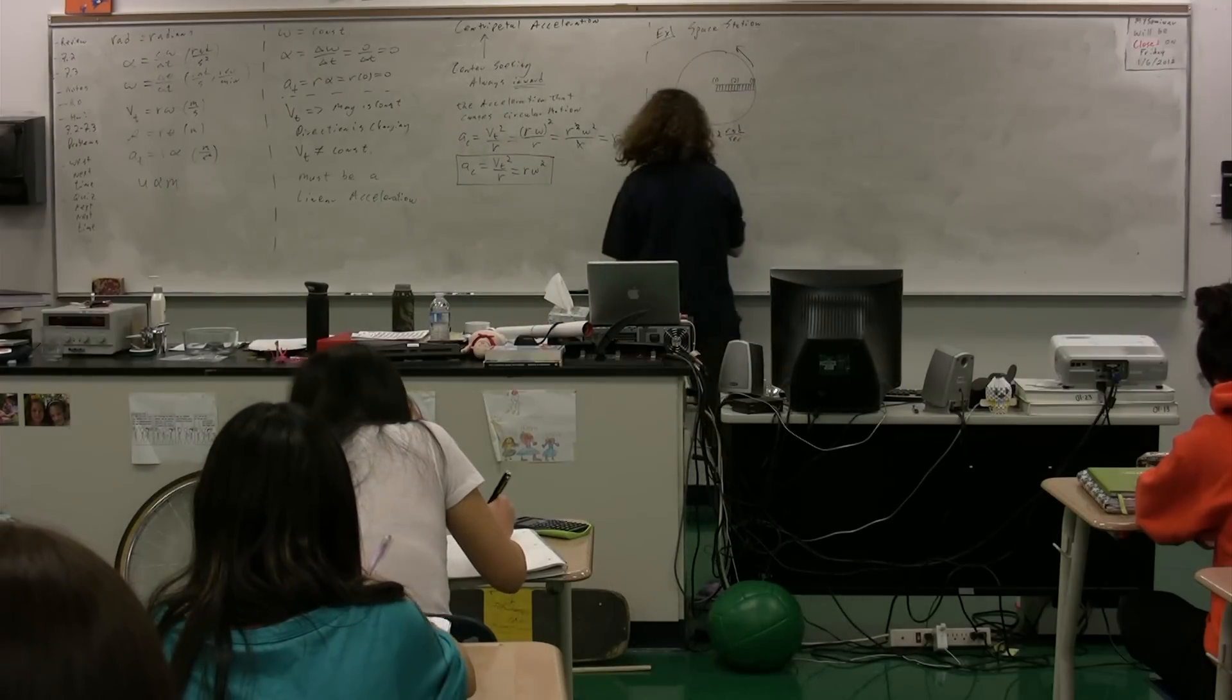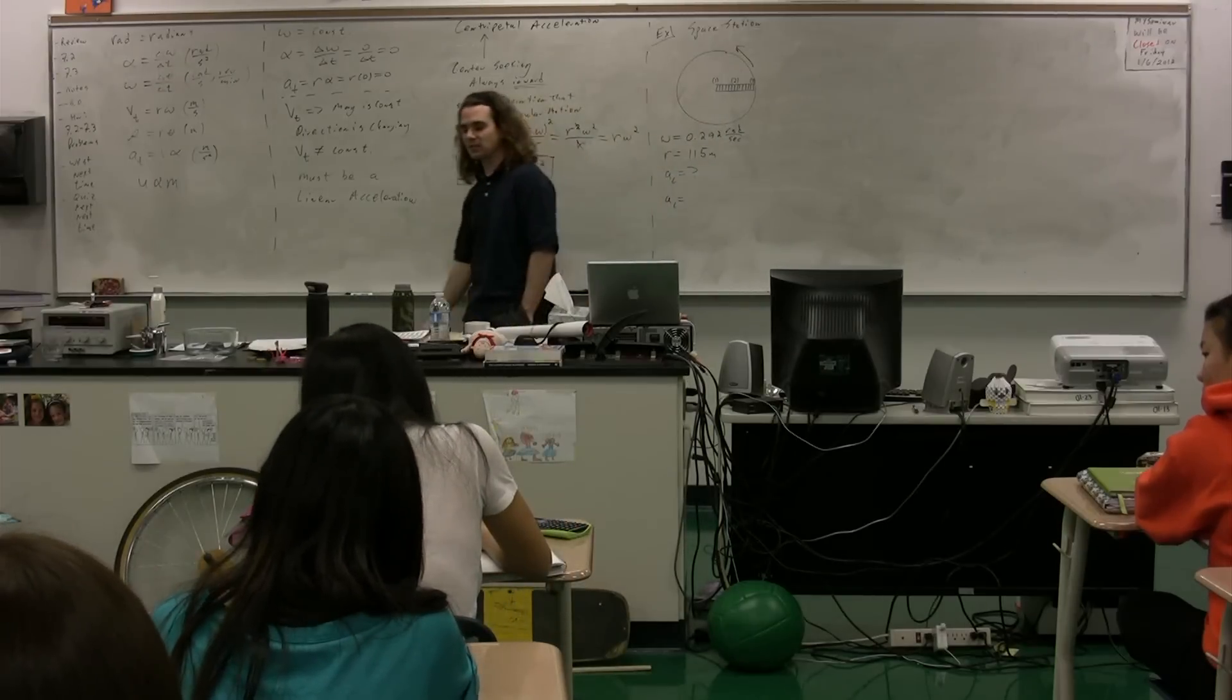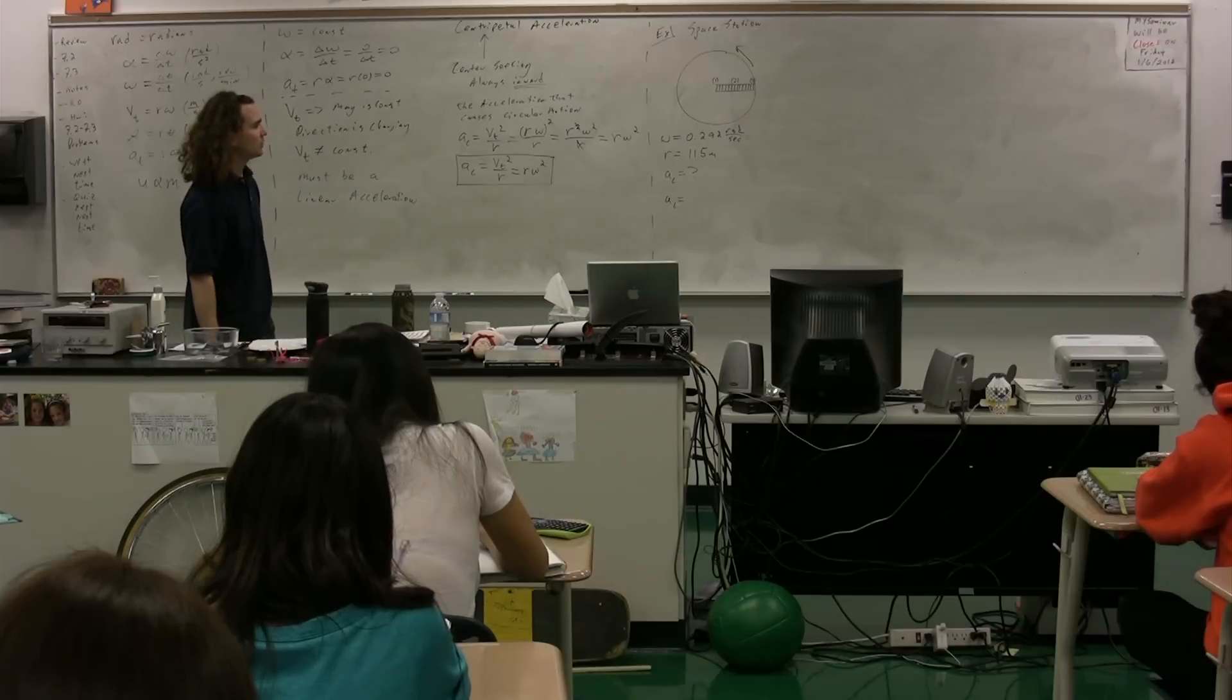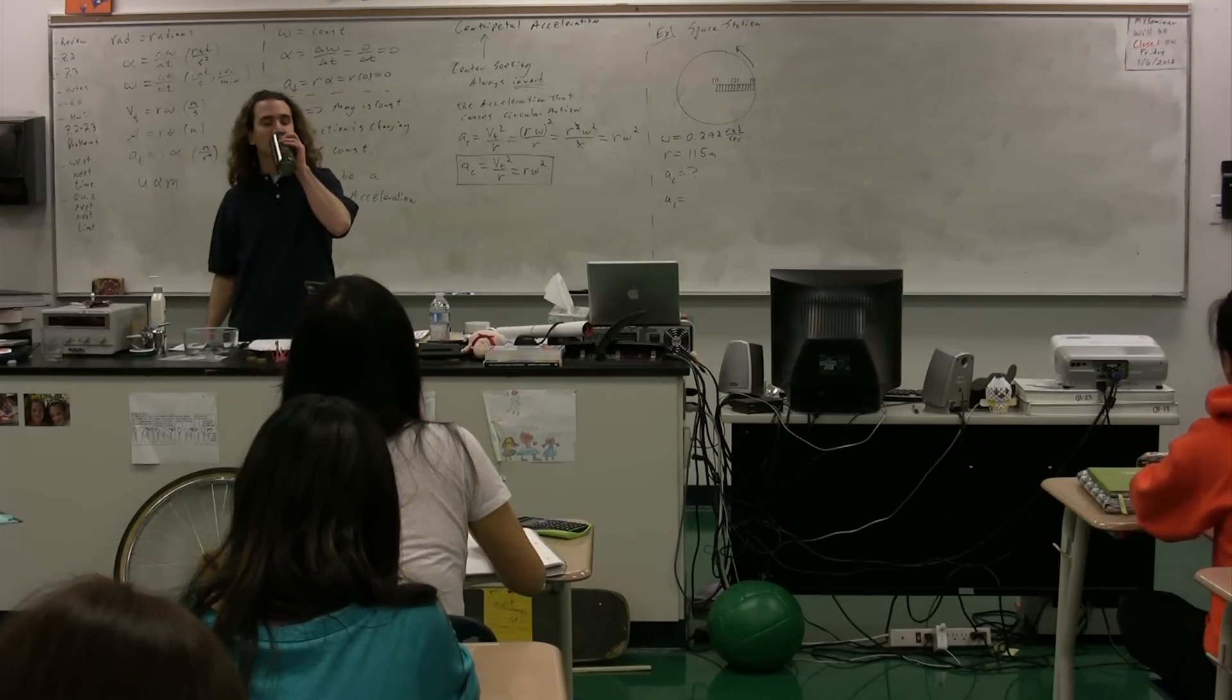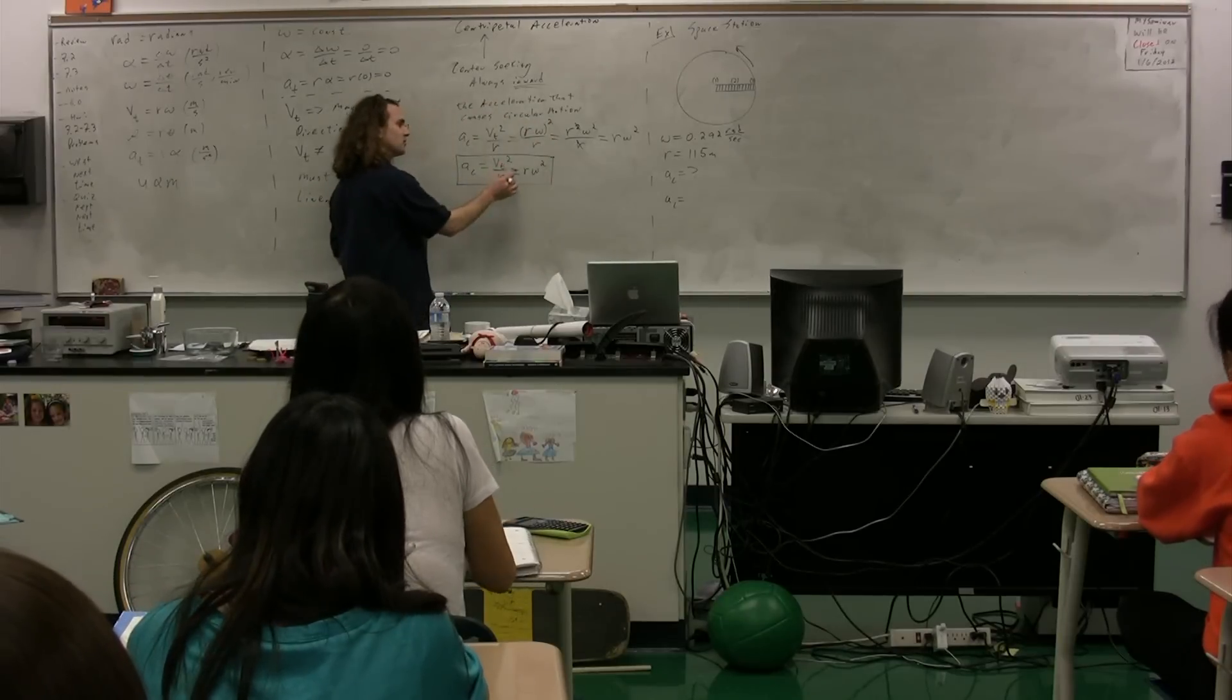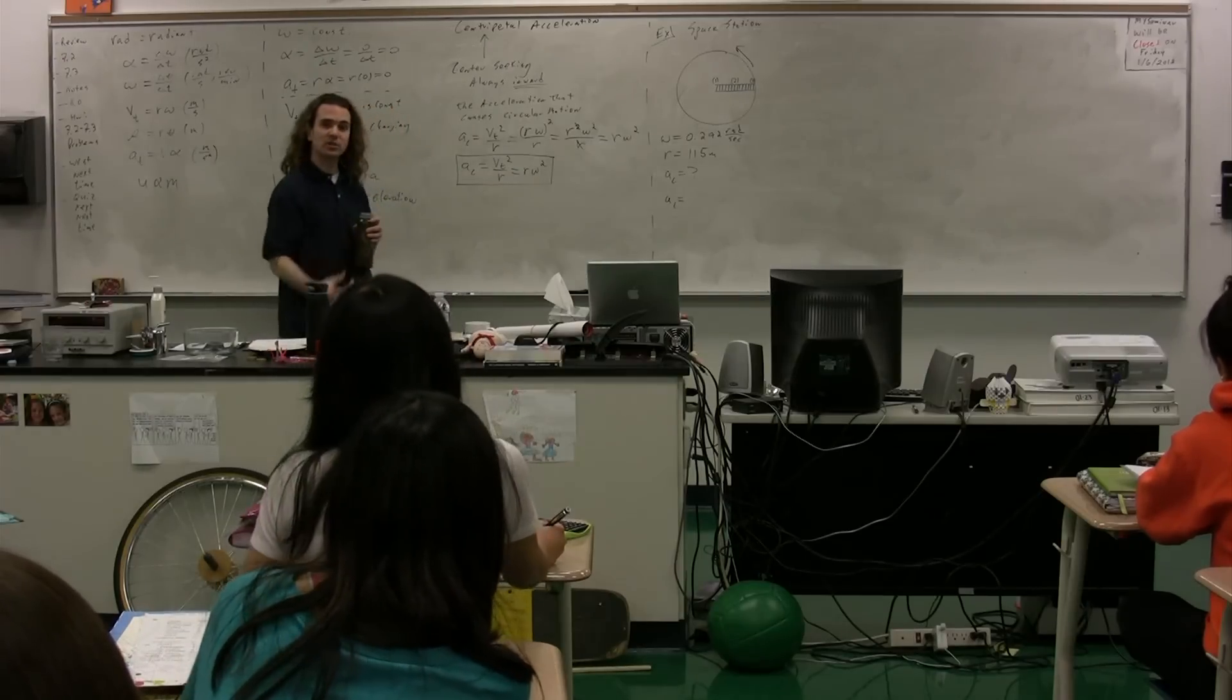Centripetal acceleration equals, we have two different choices: tangential velocity squared divided by the radius, and r times omega squared. Jessica, which one are we going to use and why? We're trying to figure out the centripetal acceleration. Which equation are we going to use and why?